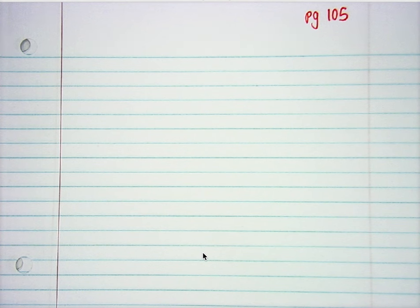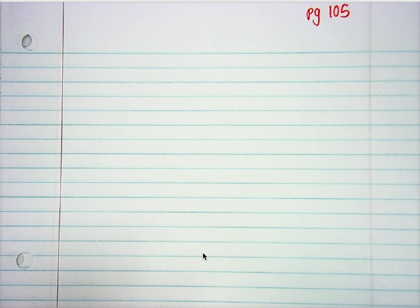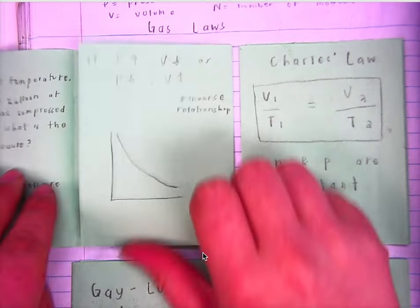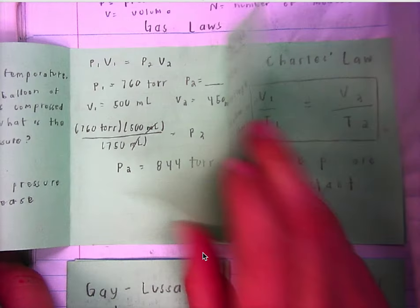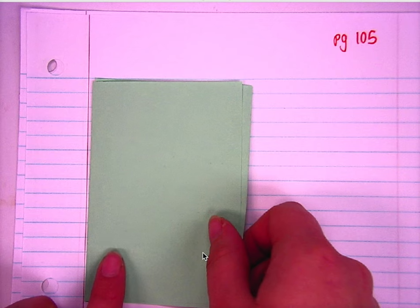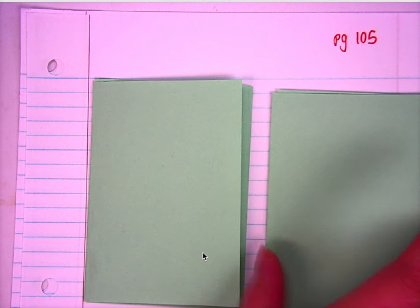We are going to be talking about the gas laws, and we're actually going to be making a foldable in our notebook. When you guys are done, it should look something like this — you have four of those little foldables. Each of them will open up and have the relationship, an example problem, and some real-life examples. Let's go ahead and do the front of all of the cards first, and then we'll start talking about each law individually.